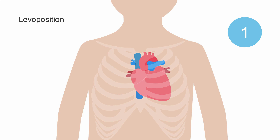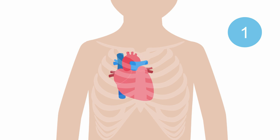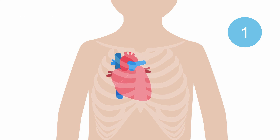There are conditions where the heart may be displaced towards the right due to extracardiac structures. If the heart ends up in a midline position, this is termed mesoposition. If it is displaced even further, for example by a left diaphragmatic hernia, and ends up sitting in the right side of the chest, then this is termed dextroposition.